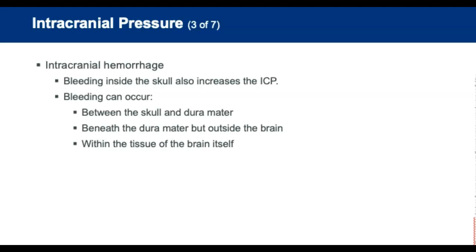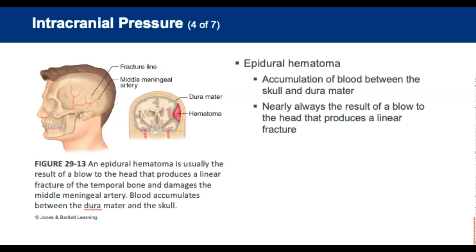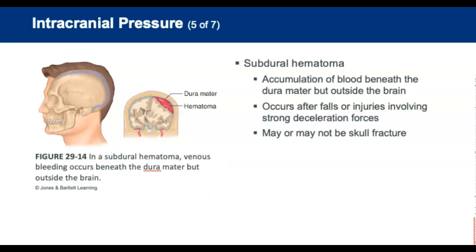Intracranial hemorrhage is bleeding inside the skull that usually increases ICP. Bleeding can occur between the skull and the dura mater, beneath the dura mater but outside the brain, or within the tissues of the brain itself. An epidural hematoma is accumulation of blood between the skull and the dura mater, nearly always the result of a blow to the head that produces a linear fracture of the thin temporal bone. Arterial bleeding into the epidural space results in rapidly progressing symptoms. Often the patient loses consciousness immediately following the injury, followed by a brief period of consciousness called the lucid interval, after which the patient lapses back into unconsciousness. The pupil on the side of the hematoma becomes fixed and dilated, and death will follow very rapidly without surgery to evacuate the hematoma.